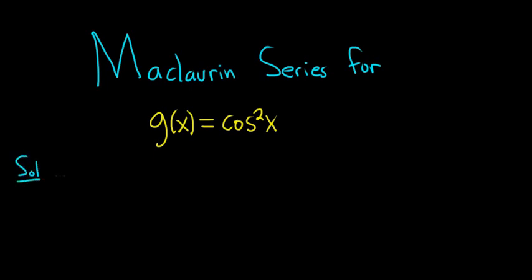The first thing we'll do is we'll use a common trig identity. So whenever we have cosine squared x, we can write this as 1 plus cosine 2x all divided by 2. Super useful.